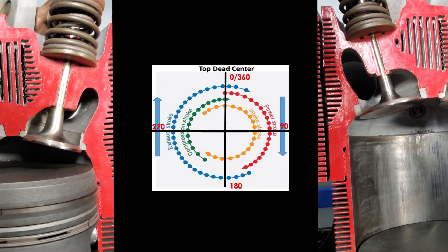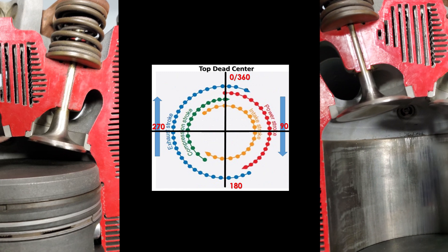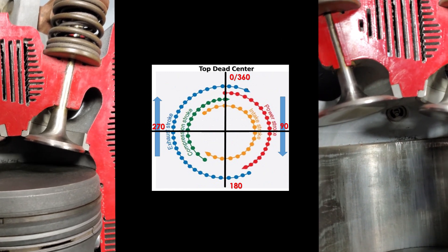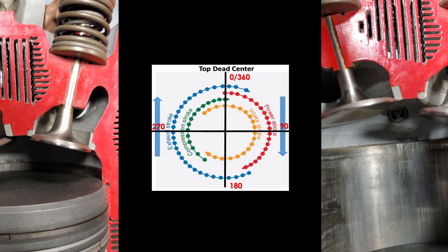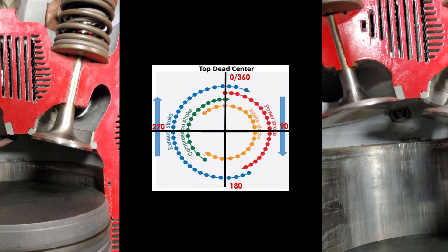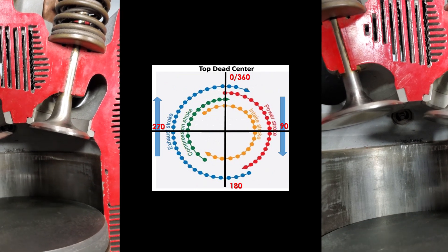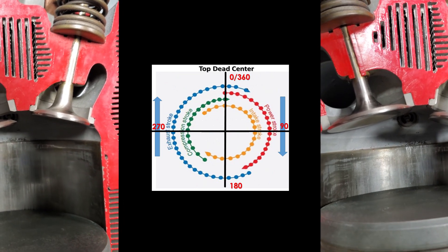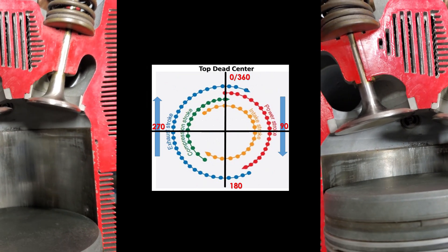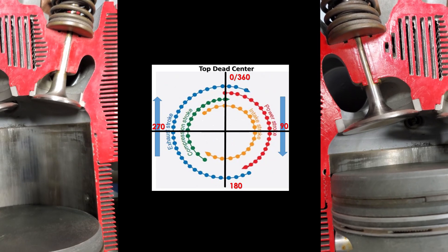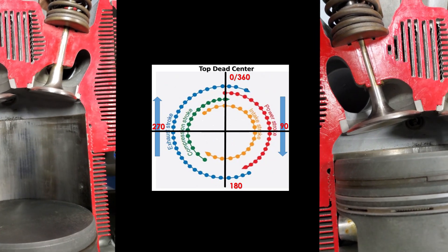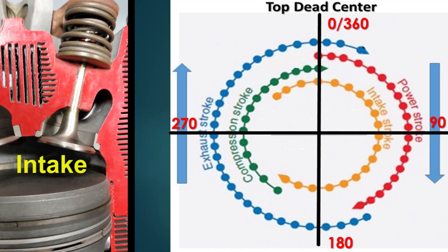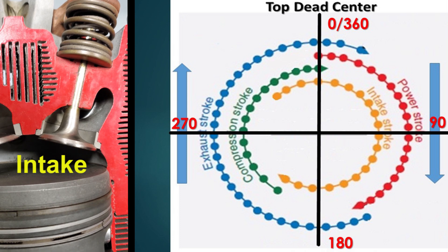For a reciprocating engine to operate properly, each valve — the intake and the exhaust — must open at the proper time, stay open for the required length of time, and close at the proper time.